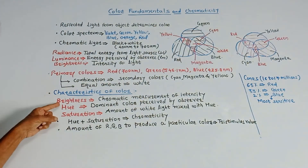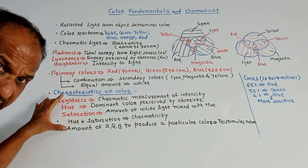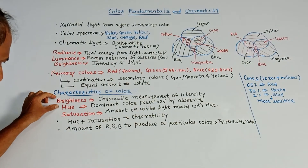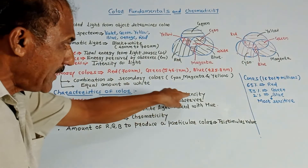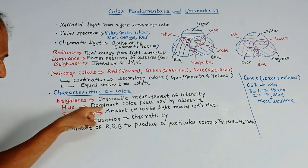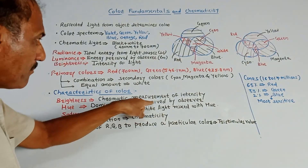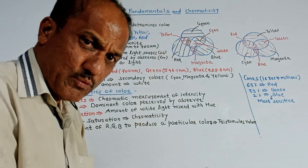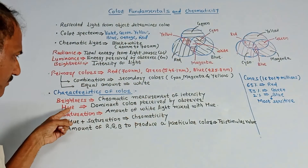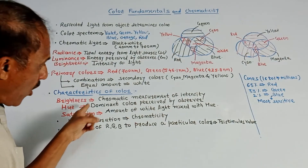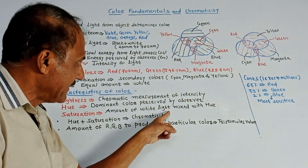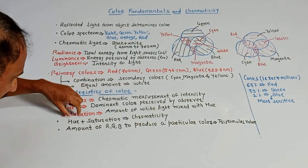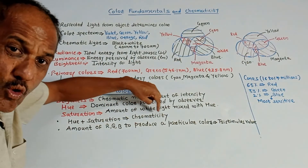Now, characteristics of colors. First characteristic is brightness — the chromatic measurement of intensity is called brightness. Next is hue — it is the dominant color perceived by the observer. So whatever colors are perceived, the dominant color is measured in terms of hue. Saturation indicates how much white light is getting mixed with the hue. The combination of hue and saturation is called chromaticity.